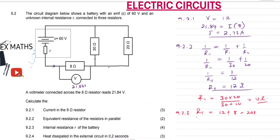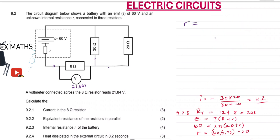We use the formula for EMF: E equals I times open bracket external resistance plus internal resistance. Our EMF is 60 volts, so 60 equals 2.73 times the quantity 20 plus R. Solving for R: R equals 60 divided by 2.73, then minus 20. This gives us R equal to 1.98 ohms. That is the answer for 9.2.3.